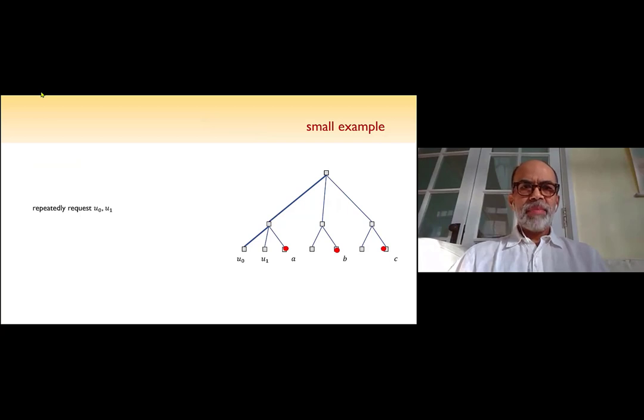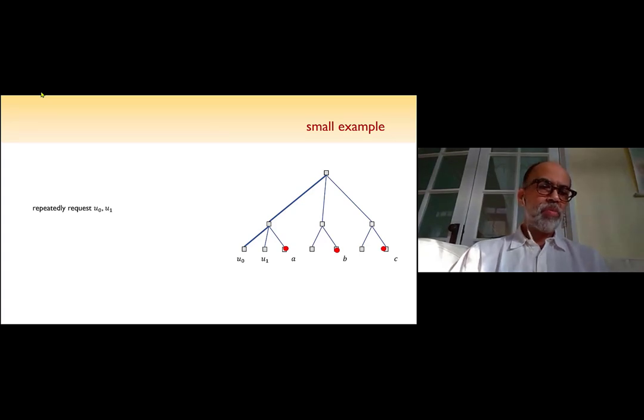So that's the K-Server problem. Here's a little example. Suppose I had this tree and this tree was defining the metric. Shortest path distances in this tree give you the metric. There are three servers sitting at A, B, and C. Suppose I repeatedly give you requests at U0 and U1. When you first see the request at U0 and U1, you would be tempted to move servers from A, from the local servers, to satisfy it, because you don't know the future.